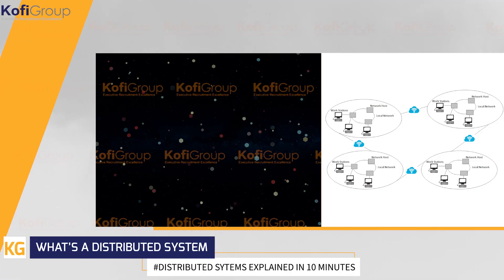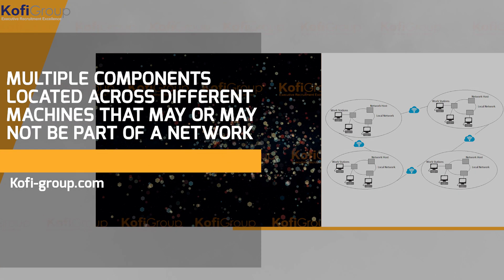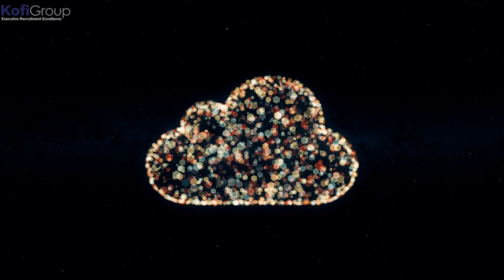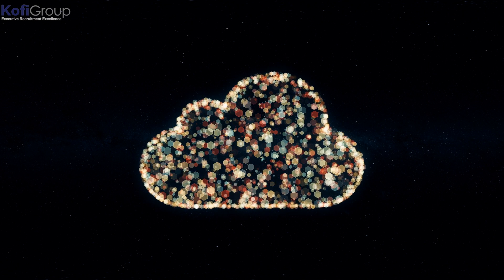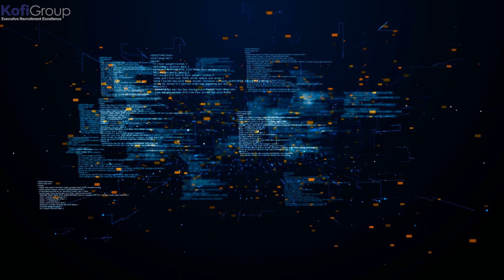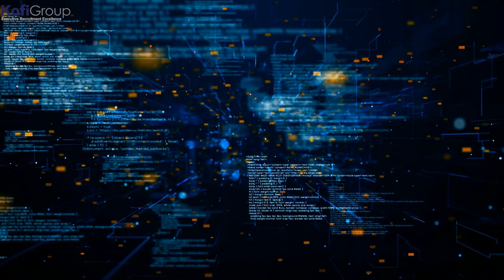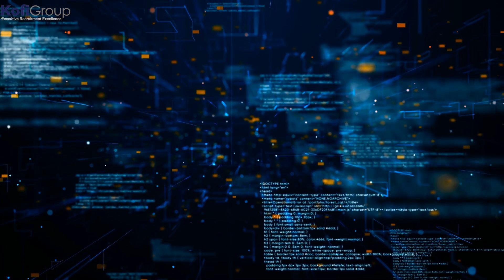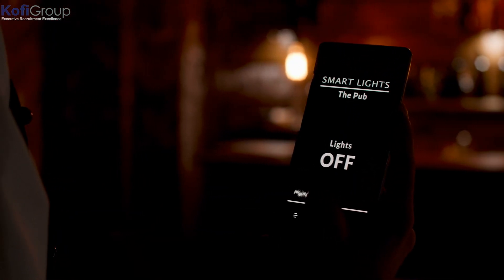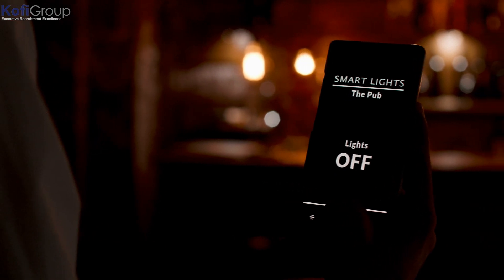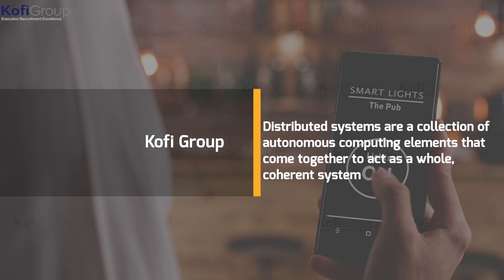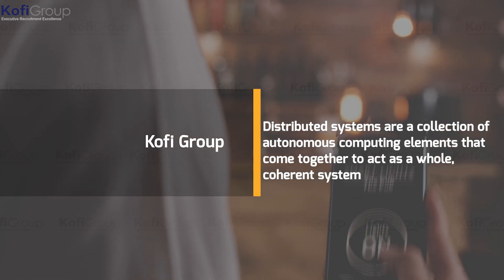So what's a distributed system? In short, a distributed system is comprised of multiple components located across different machines that may or may not be part of a network. These machines converse with one another to synchronize and order any actions requested by the user, carried out in such a way as to appear to the user like they've been performed by a single coherent system. Microservices can also be an example of a distributed system — running multiple copies of each component on separate machines, adding redundancies so the failure of a single machine doesn't result in loss of data or function.